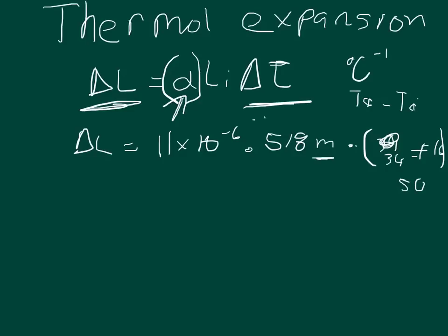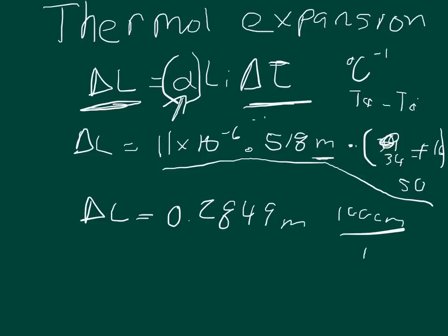So we just need to do 11 times 10 to the negative 6 times 518 times 50. That gives us the change of length equals 0.2849 meters. We want the answer in centimeters, so 100 centimeters per 1 meter, multiply and cancel out meters, and you get 28.49 centimeters as your answer.